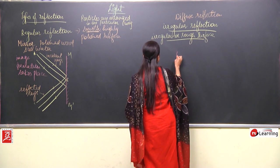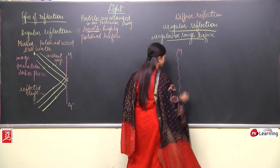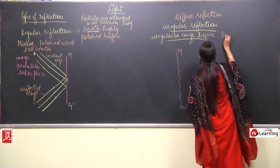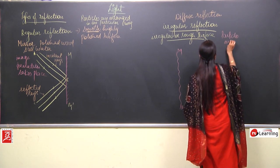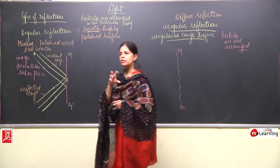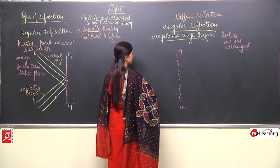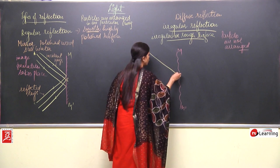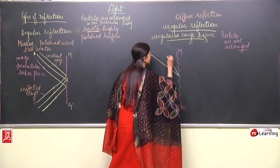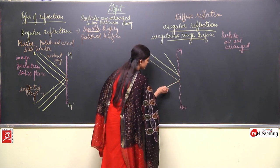This is the rough surface. When we talk about a rough surface, the particles are not arranged in any particular way — they are set haphazardly in any direction. So when a beam of rays falls on this uneven surface, they get scattered unevenly in any direction.